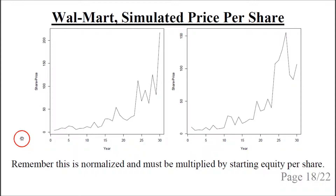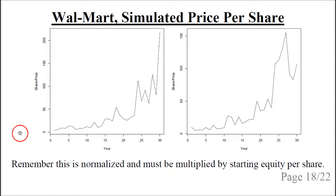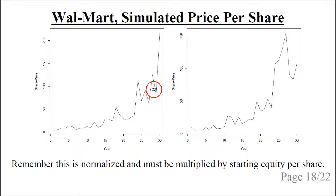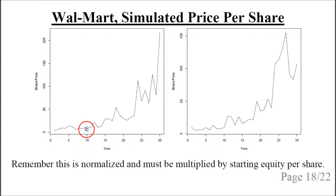These plots show the simulated price per share, going from fairly low up to quite high. This takes into account both growth in equity and the decrease in the number of shares. Remember that this is normalized, so all numbers must be multiplied by the starting equity per share. The simulations are quite different from each other — there is a tendency for them to increase exponentially, but they are very jagged. The pricing model used is quite crude.